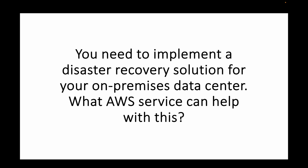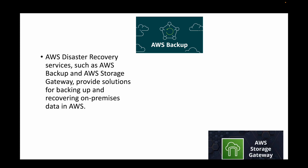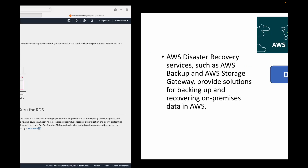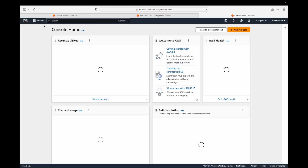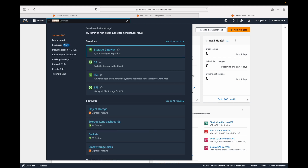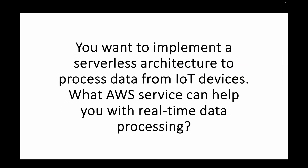The next question is: you need to implement a disaster recovery solution for your on-premises data center — which service can you use in AWS? AWS disaster recovery services such as AWS Backup and AWS Storage Gateway provide a disaster recovery option that can be used to implement a DR setup for your on-premises data center. You can make use of Storage Gateway, and also AWS Backup to maintain different backups of your data.